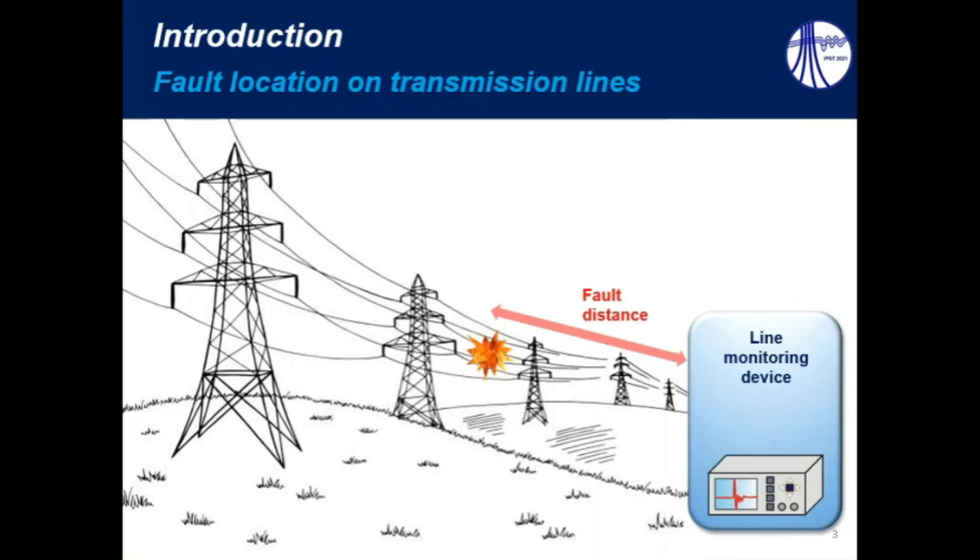It is well known that utilities have applied fault location algorithms in order to pinpoint faults on monitoring transmission lines after permanent short sequence. This procedure is applied with the aim to speed up the line restoration time of the permanent fault. To do so, a diversity of technologies have been applied. Line monitoring devices are used to capture measurements from one, two, or more line terminals, in such a way that we can analyze these measurements and estimate the fault distance.